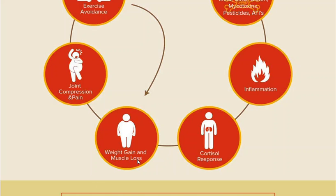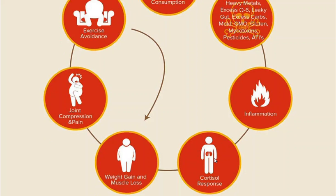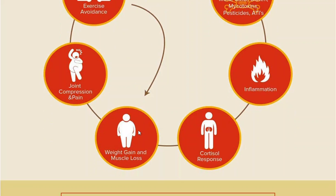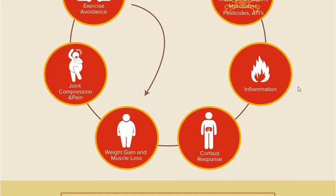Muscle loss leads to shortened muscles. When your muscles are shorter, your joints are compressed — that's what you're seeing up here: joint compression and pain. And what happens when we're in pain? When our muscles are weaker and we're in pain, we tend to avoid exercise, sit on the couch more, not do as much. And that can lead to greater degrees of weight gain. Exercise avoidance leads to more weight gain. If we're chronically inflamed, this cycle just repeats itself over and over again.